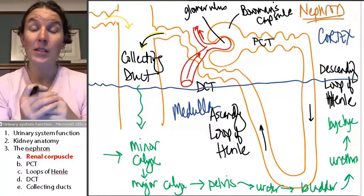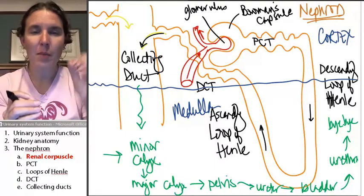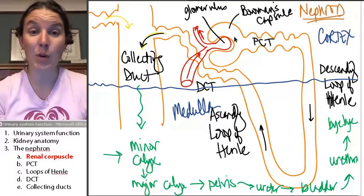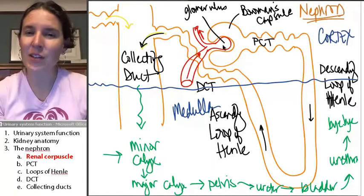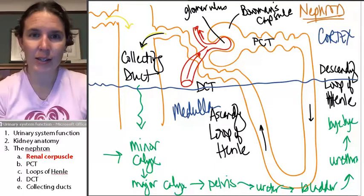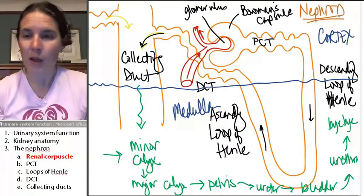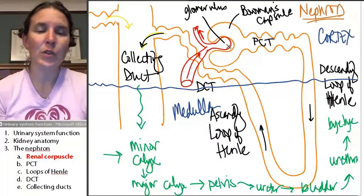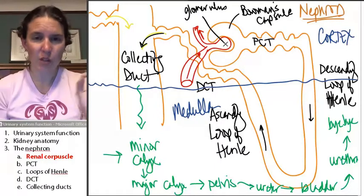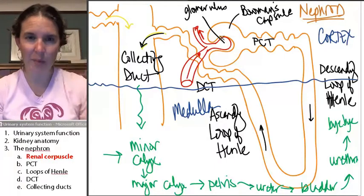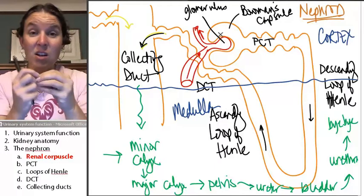The renal corpuscle is where blood comes in contact with the kidney, and it happens at Bowman's capsule and the glomerulus. If you look here, you'll see that Bowman's capsule is actually like a cup surrounding this knot of capillaries.